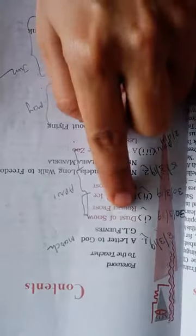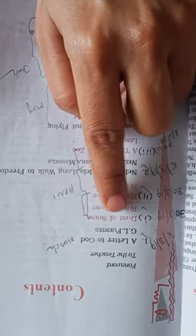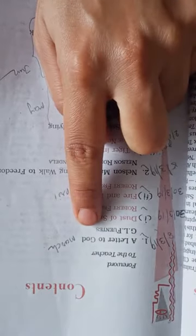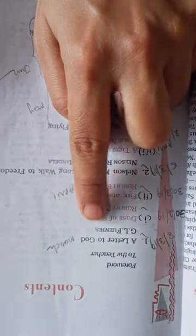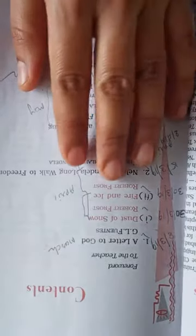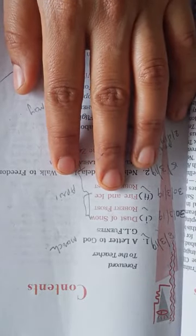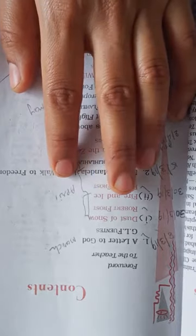Hello students, today in this video we will start working with English literature textbook First Flight. In this first poem, that is Dust of Snow by Robert Frost, we already completed our first chapter that is A Letter to God. I hope you people have done with your question answers and understood exercise topics also from that lesson.